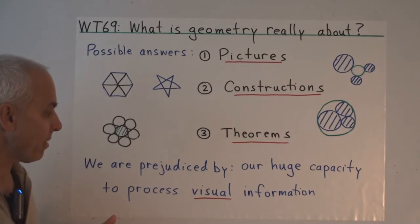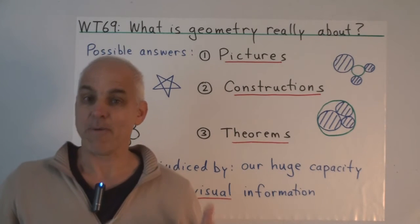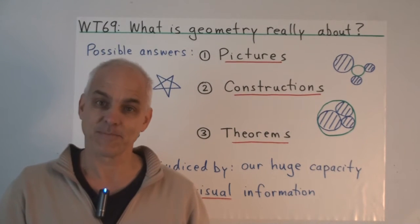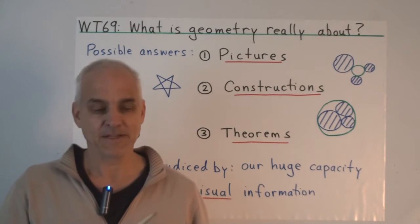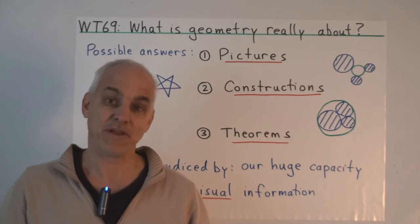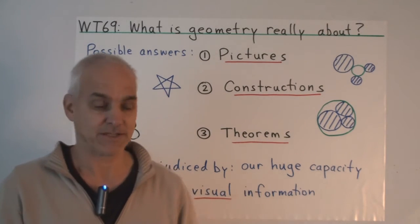The more modern approach to the subject is that geometry is really about theorems. It's about facts that we can state and that we can prove. And this is, I would say, the 20th century approach. Try to create lots of theorems, which are statements about geometrical objects.